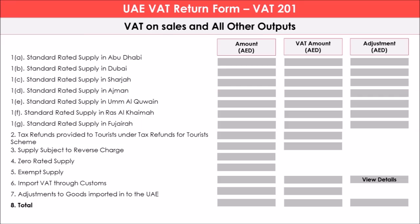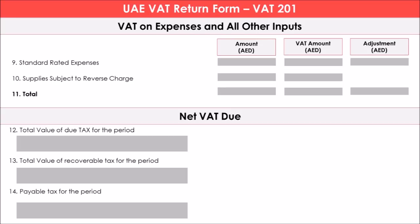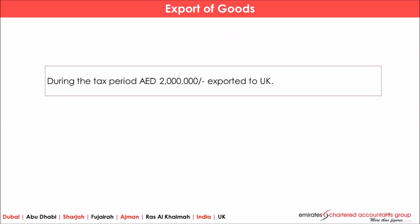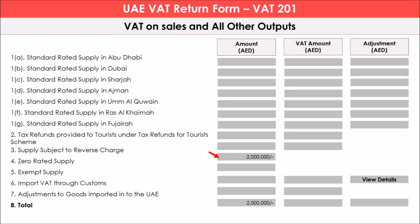Now let us see how export of goods is disclosed in UAE VAT return form number 201. The first part is output VAT and the second part is input VAT. For example, if 2 million is exported to UK during the tax period, it is a zero rated supply. In the UAE VAT return form, box number 4 is where we disclose the value of exports — that is 2 million — and since it is zero rated, there is no tax column, so 2 million will be displayed in box number 4.